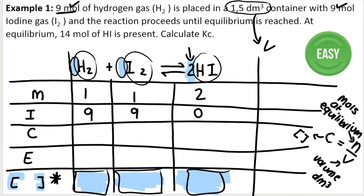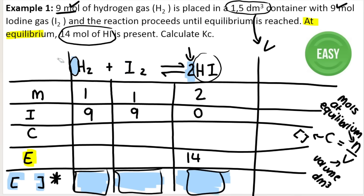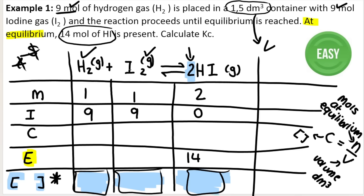Carrying on reading: the reaction proceeds until equilibrium is reached. 'At equilibrium' is your keyword — it means we're looking at the E row. At equilibrium, 14 moles of HI is present, so in the E row under HI, we write 14 moles. Remember, moles go in the table — nothing else but moles. All substances here are gases, so they all go in the table. If any were solids or liquids, they would not go in the table or the KC expression at all.